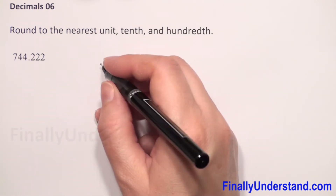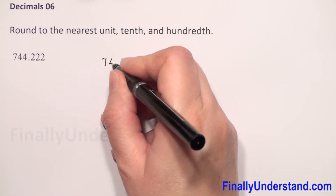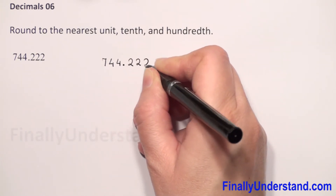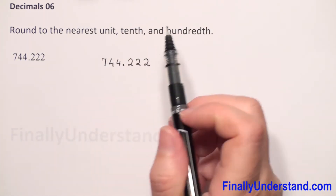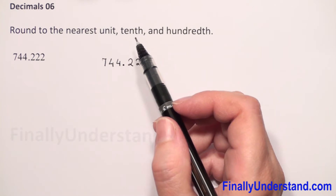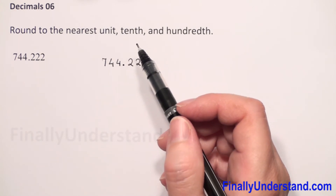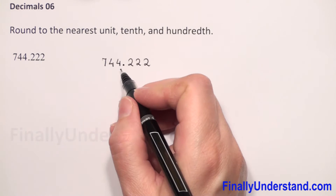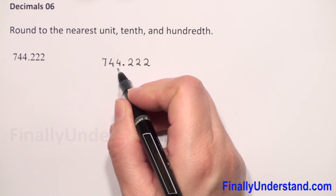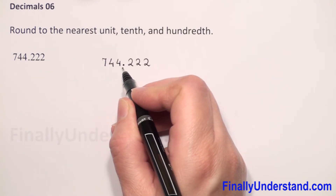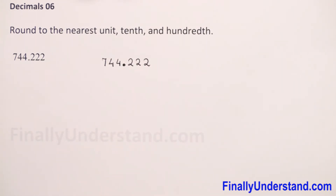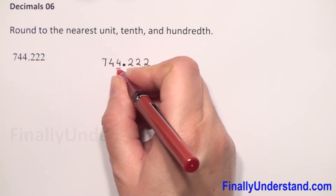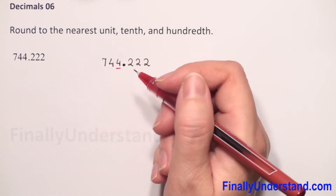So first, let me copy our example: we have 744.222. The first step is we need to find the digit to which we have to round our number — the unit. The unit is the first digit to the left from the decimal point. So we underline the digit to which we have to round our number.